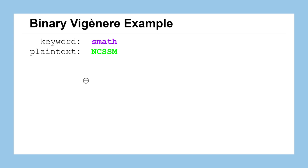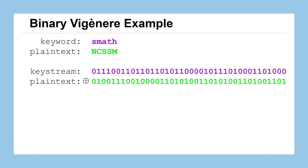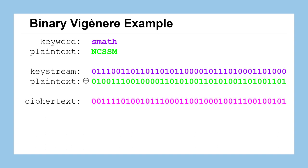Say we have the keyword SMATH and the plain text NCSSM capitalized. We combine those together in their binary forms using the XOR operation — that's the plus symbol with a circle around it. Converting both the keyword and plain text to 8-bit ASCII binary representations, we go down the line bit by bit performing the XOR operation to compute the ciphertext as binary.